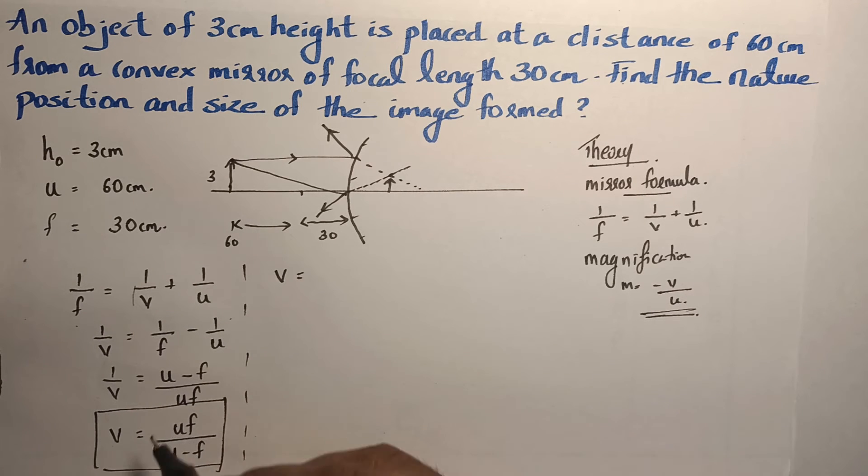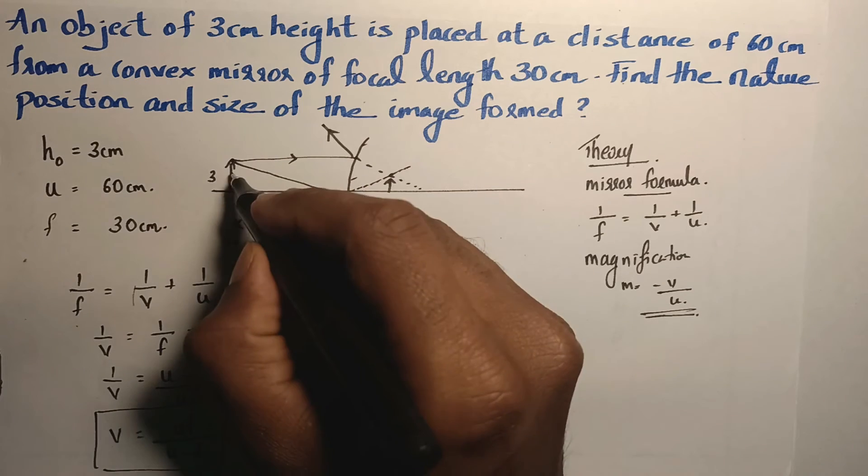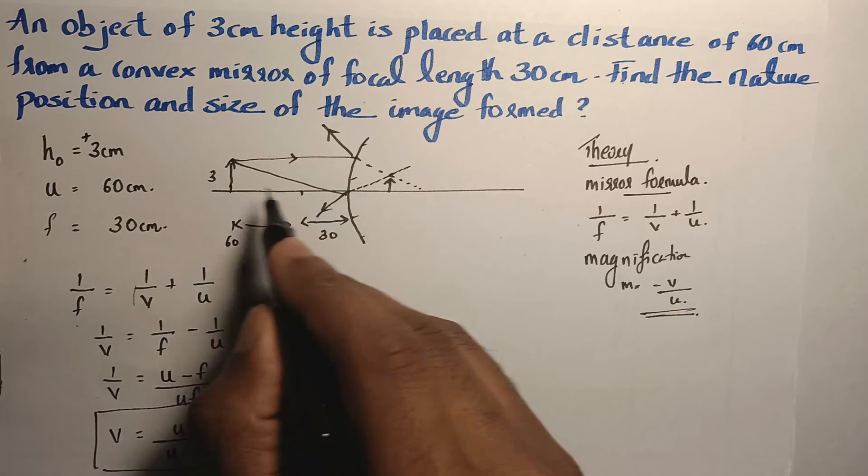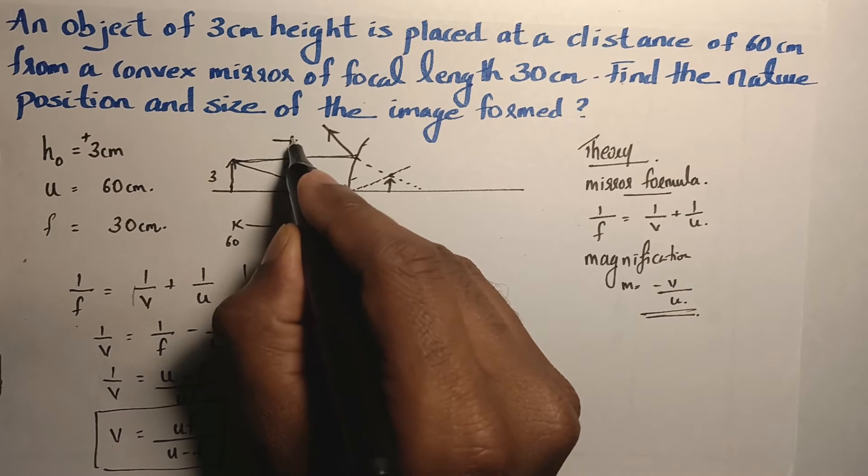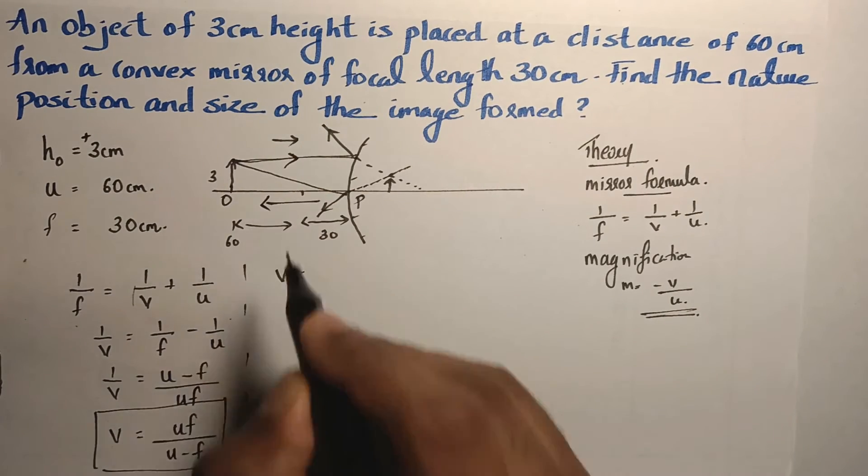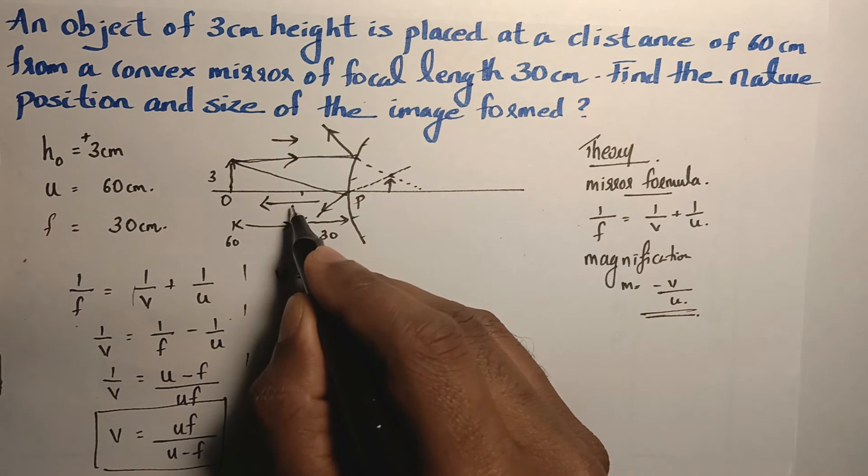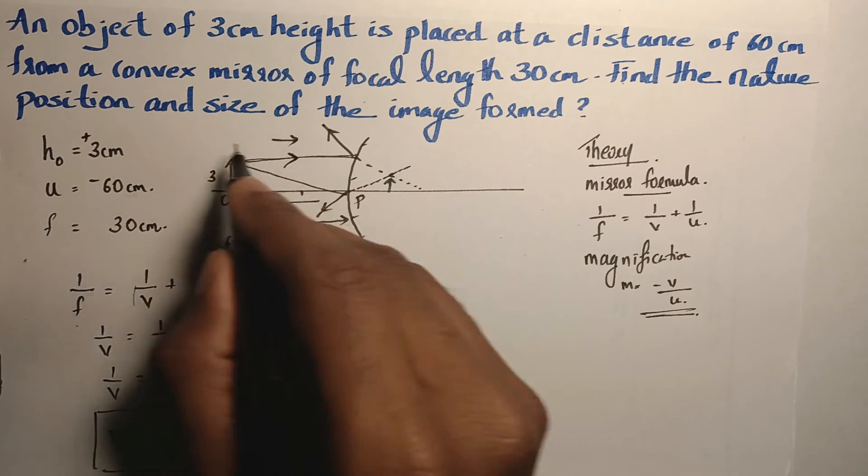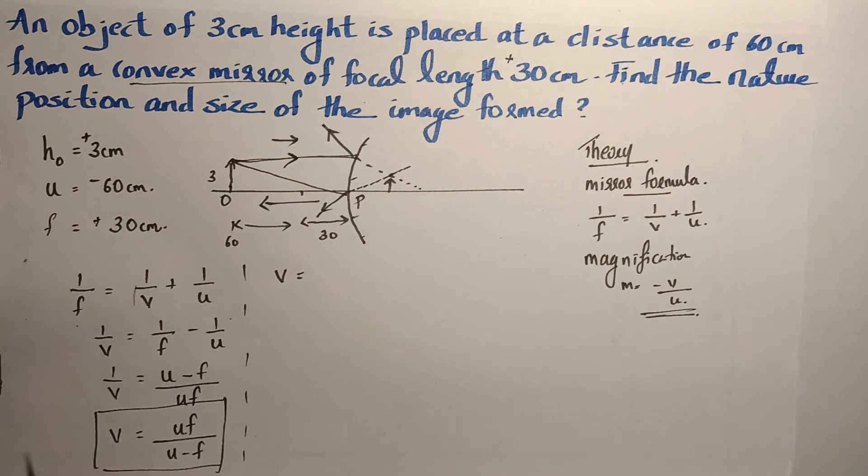Before substituting the value, we should always assign the signs to the given values. The object is always placed erect, so it is positive. The object is placed in front of the mirror such that the direction of light is in this direction and the object distance P O is measured in the opposite direction. Whenever we make a measurement opposite to the direction of light, it is negative. So, it is minus 60 and for a convex mirror, focal length is positive, so it is also positive.